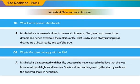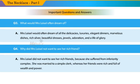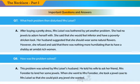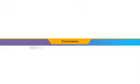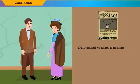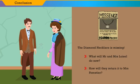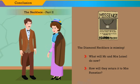Before concluding, let's check on some important questions and answers. The diamond necklace is missing. What will Mr. and Mrs. Loiselle do now? How will they return it to Mrs. Forrestier? To be continued in 'The Necklace, Part 2.'